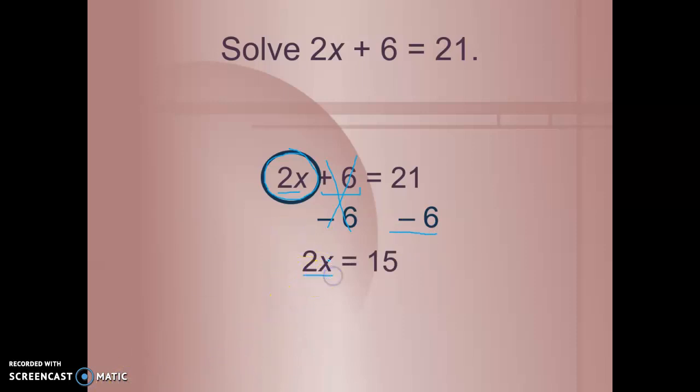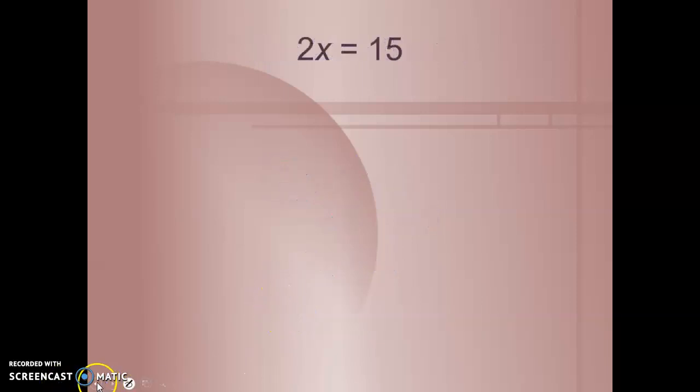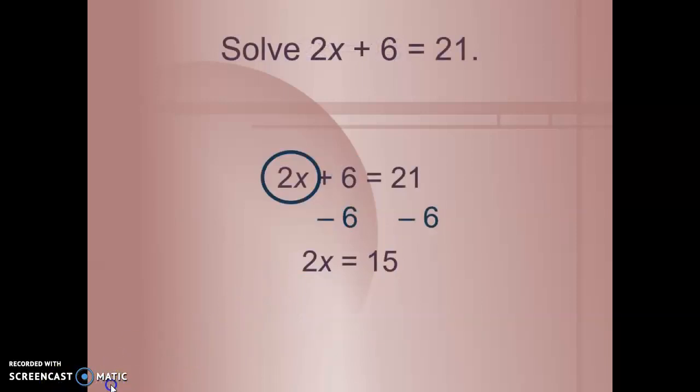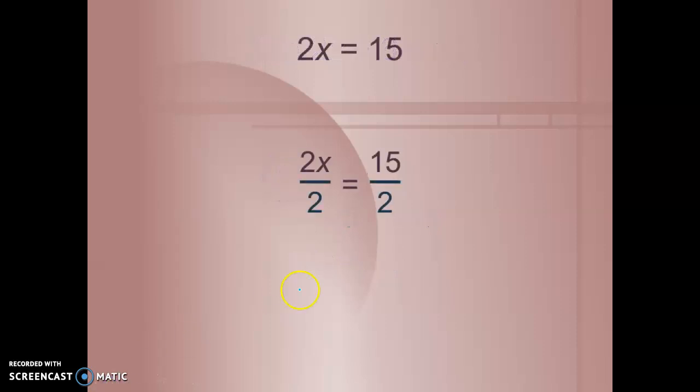Now what's being done to that x? It's being multiplied by 2. So the inverse of multiplying by 2 is dividing by 2. So I'm going to divide each side by 2 here. 2 divided by 2 is just 1. I can write the 1x or we can understand that it's implied because I can see I have 1x. So 2 divided by 2 is 1 but whatever I do to one side, I have to do to the other.